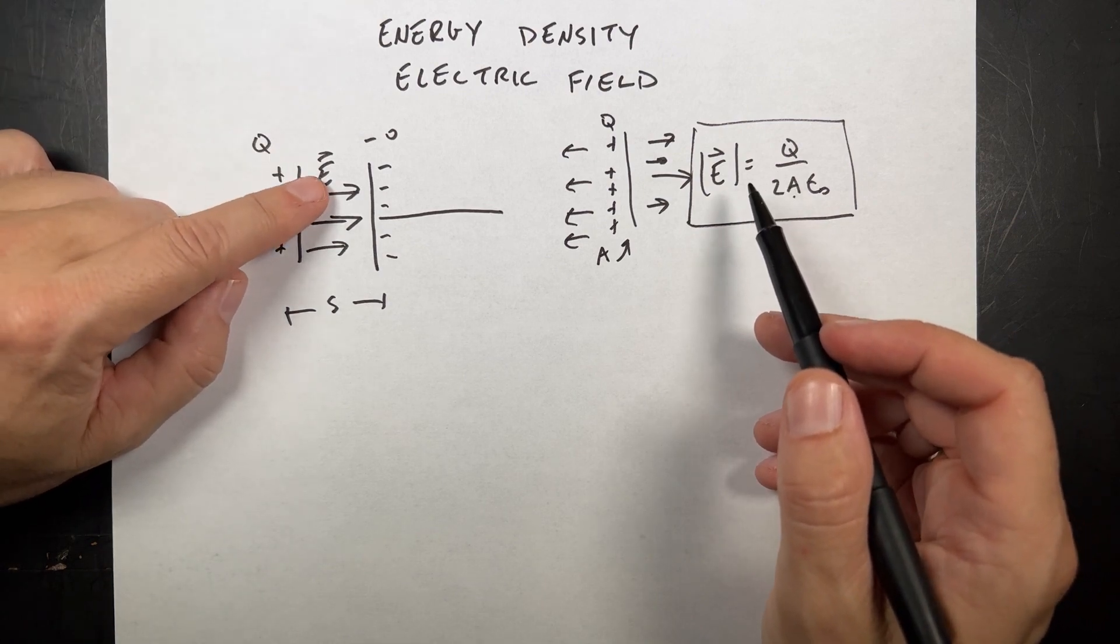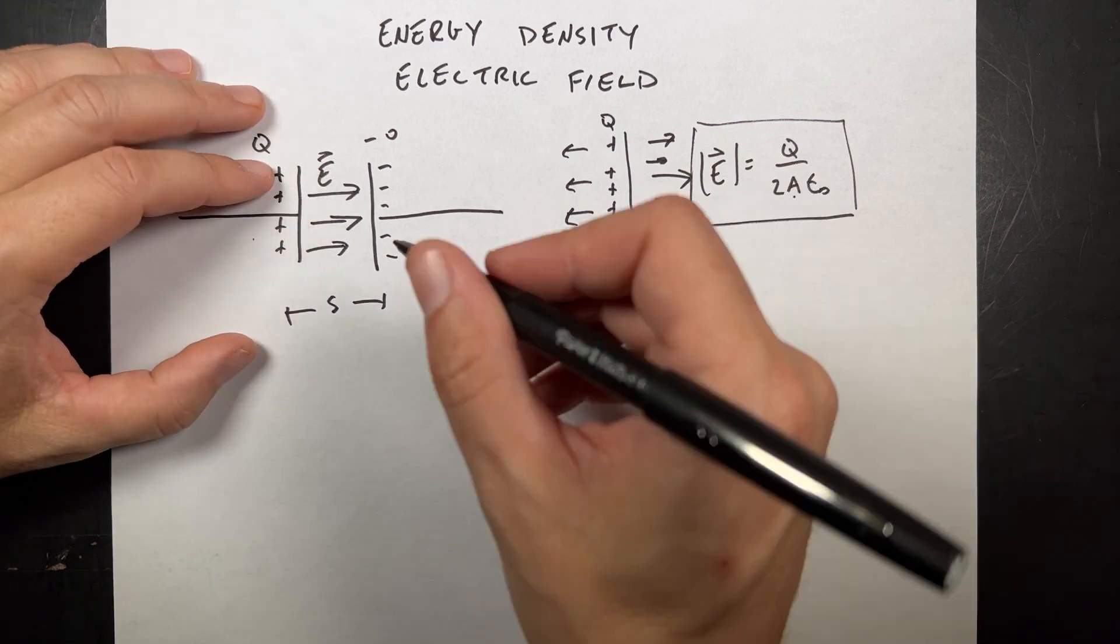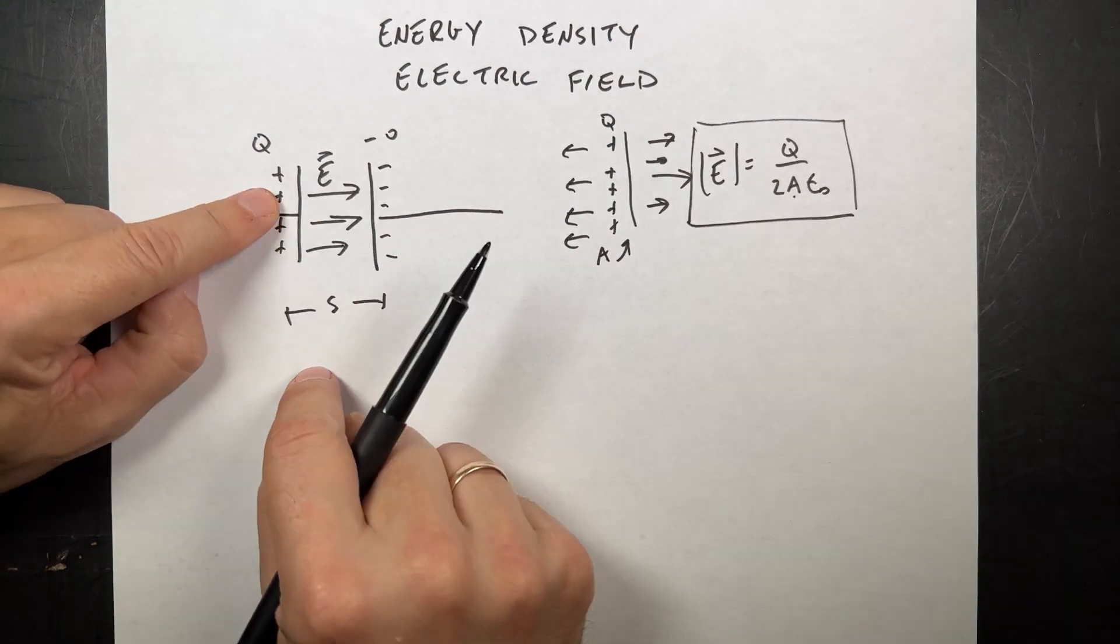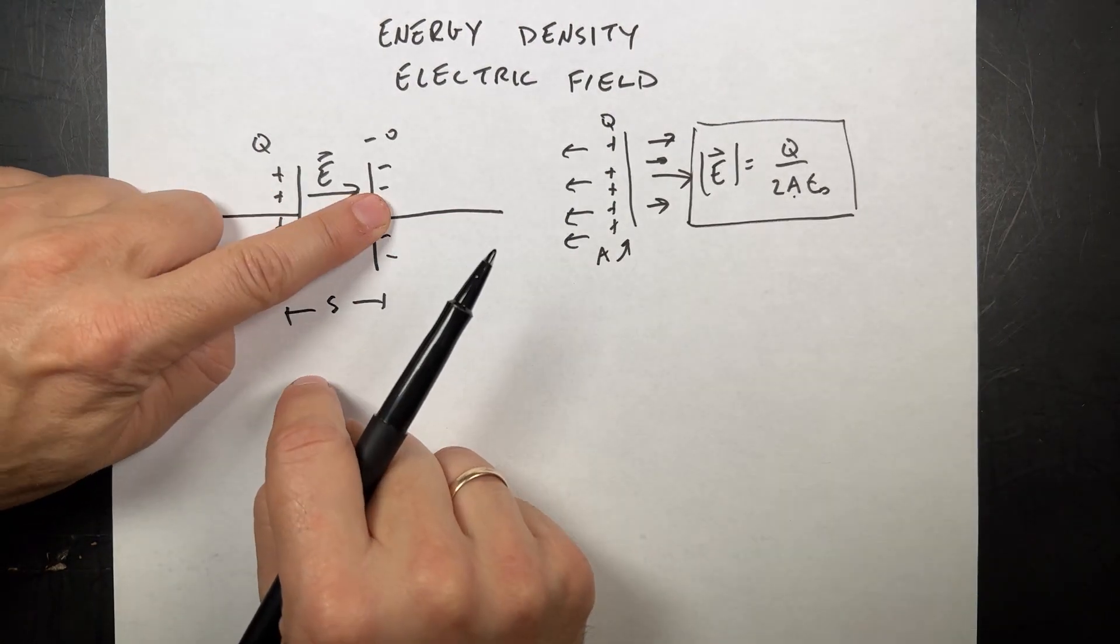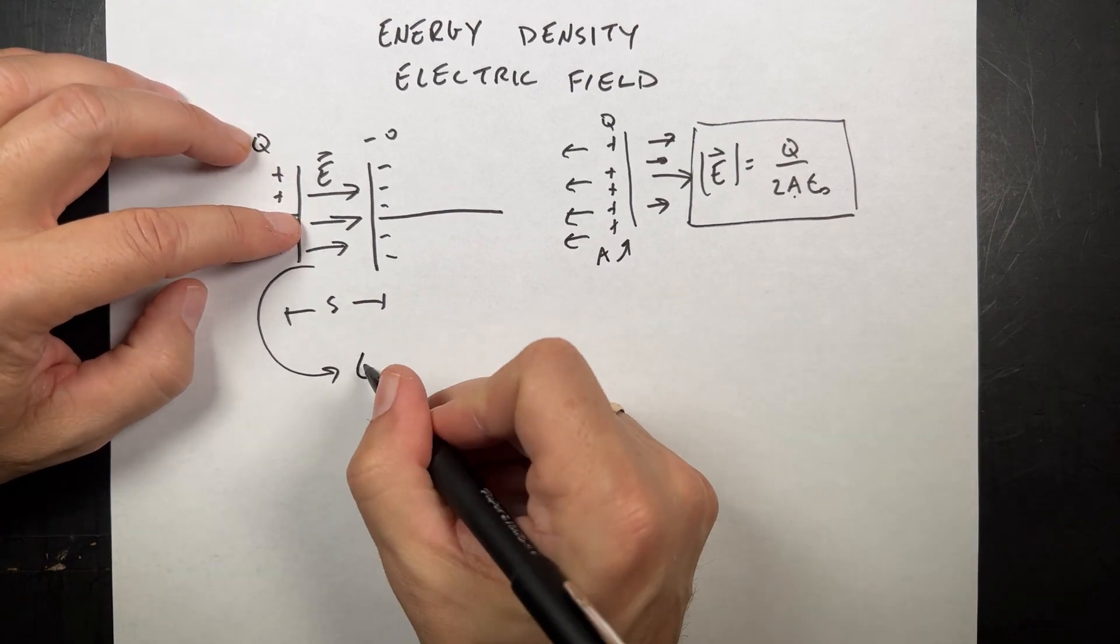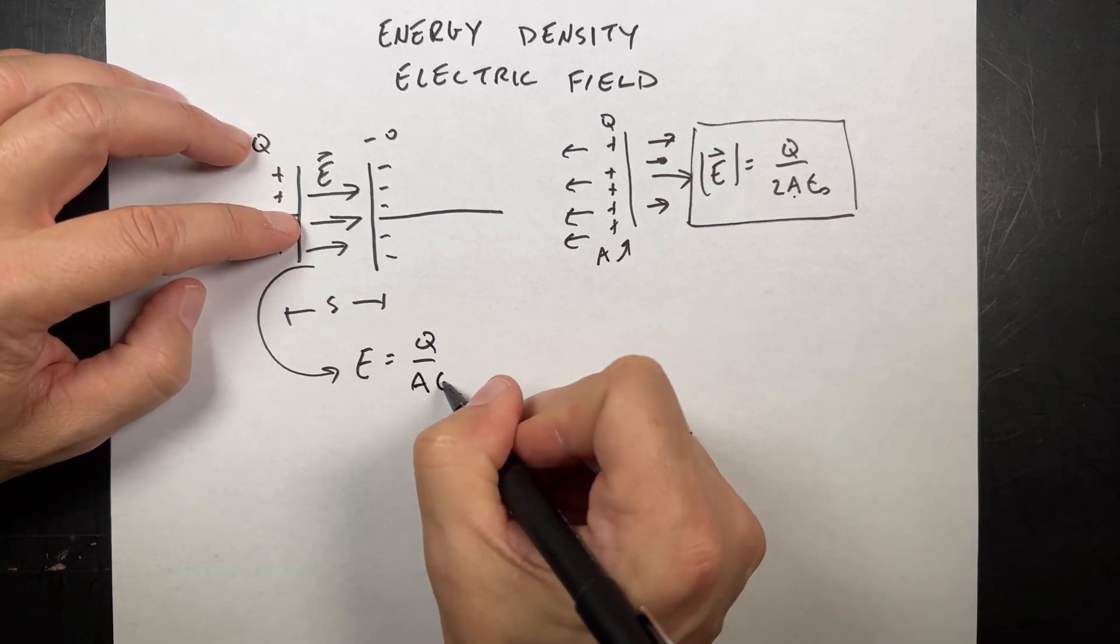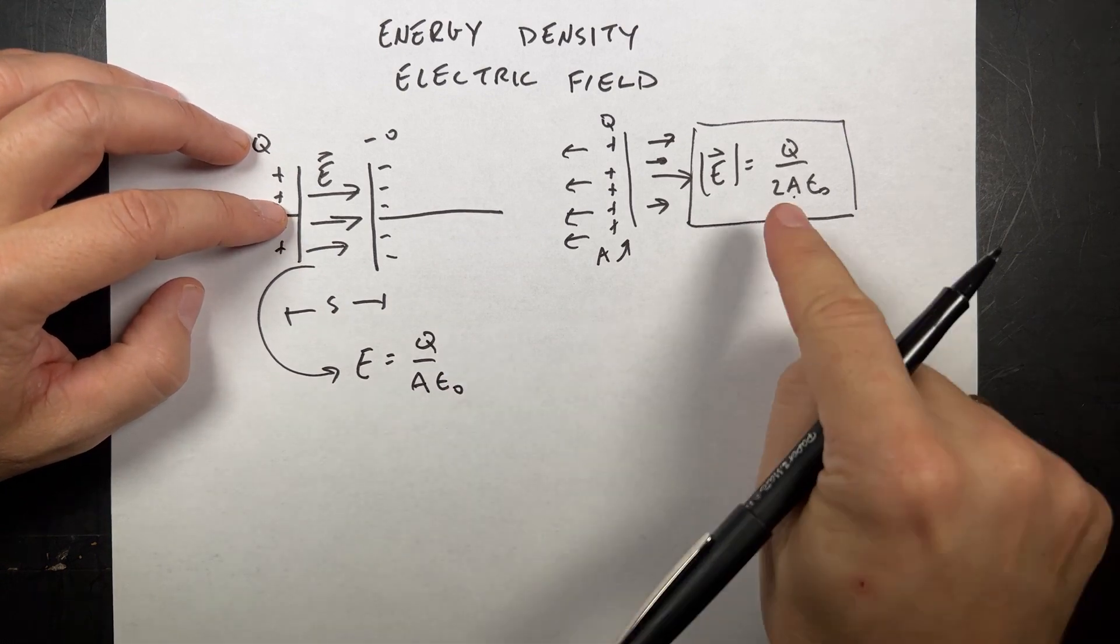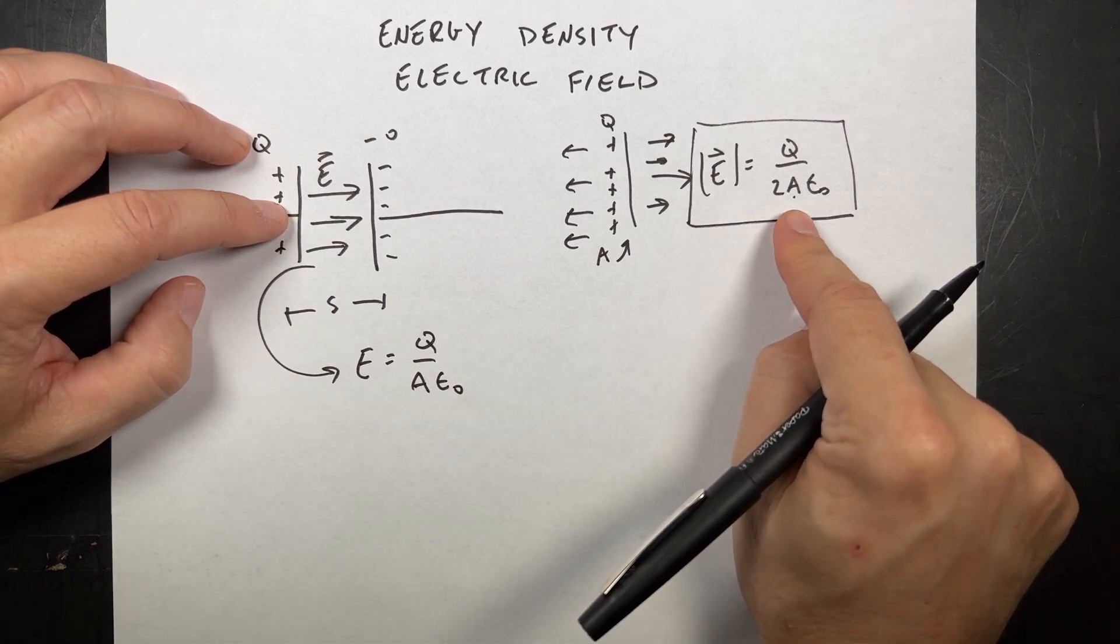Then if you go inside of a parallel plate, the electric field of a parallel plate is actually the sum of the electric field due to the positive plus the electric field due to the negative. So the electric field inside of here, you get two of those. You really have E equals Q over A epsilon naught. So there's just a two factor there because there's only one plate.